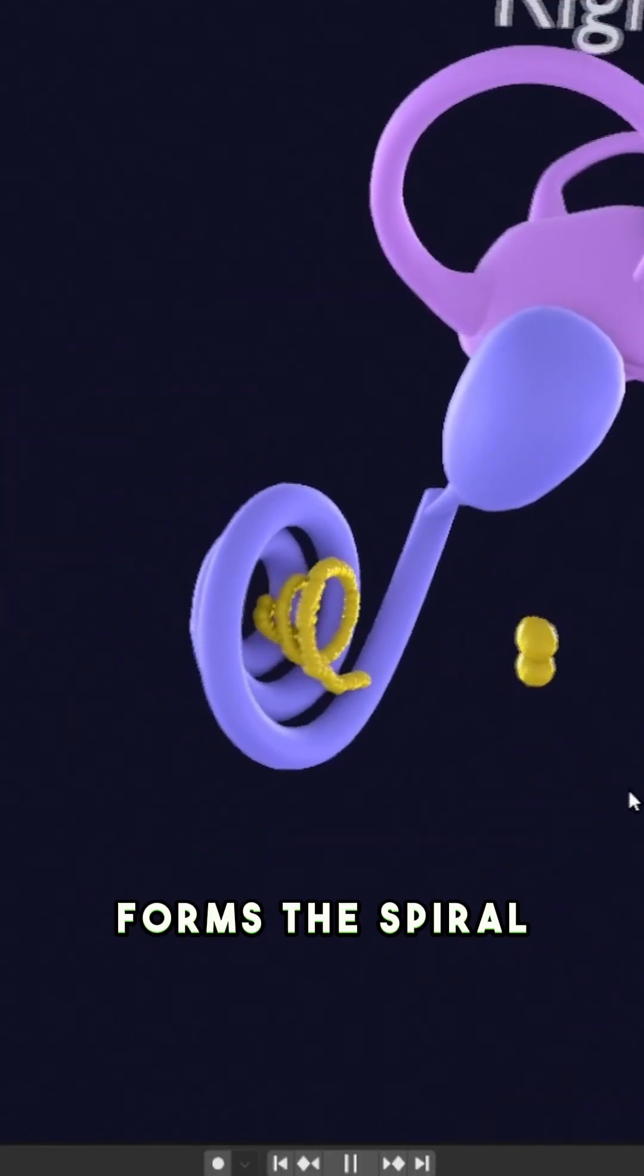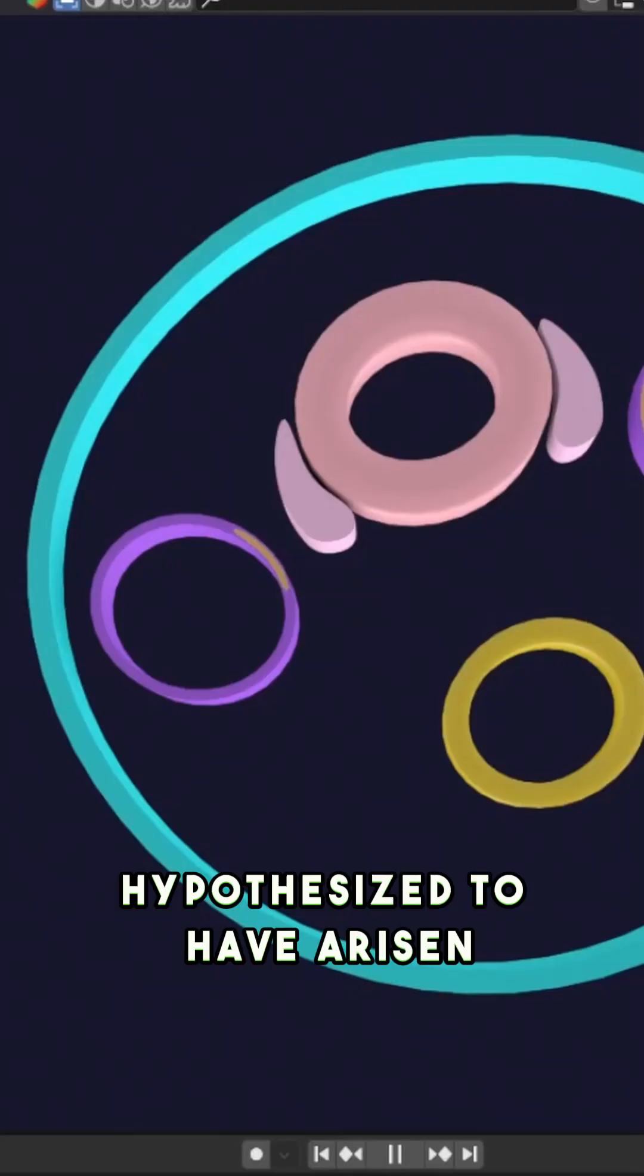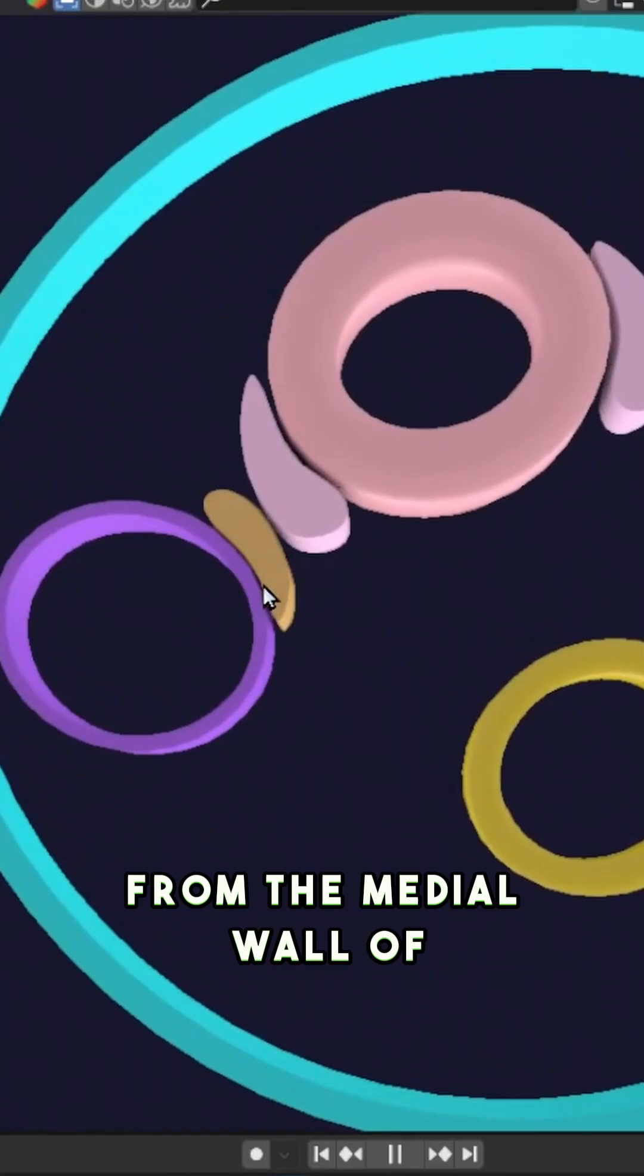A condensation of mesenchyme forms the spiral ganglia and vestibular ganglia. This condensation is hypothesized to have arisen from the medial wall of the auditory vesicle.